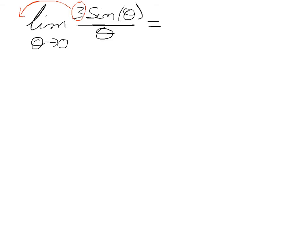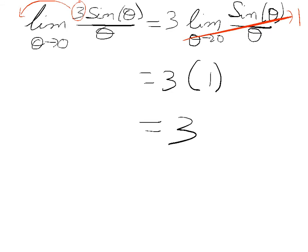And I'll park it out in front and then you can already see the difference here we have a sine theta over theta and that limit, remember is equal to 1 so we have 3 times 1 and that goes to 3.